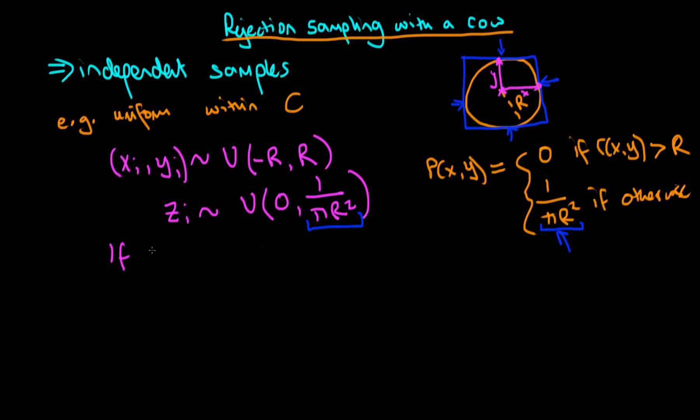Then what we do is we compare the value of zi with the corresponding probability density at that particular point. If zi is greater than the probability density then we reject xi and yi as a sample.